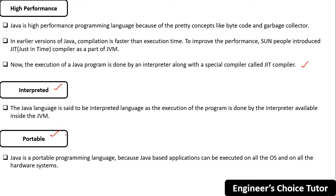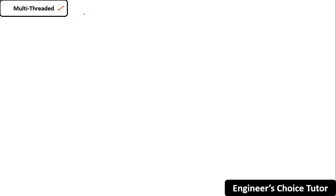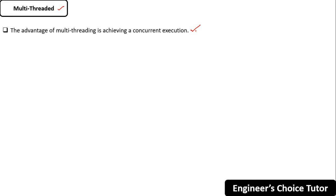Whatever application you develop using Java can be executed on all operating systems and all hardware systems. The next buzzword is multi-threaded. The advantage of multi-threading is achieving concurrent execution — that means executing multiple tasks at the same time simultaneously.